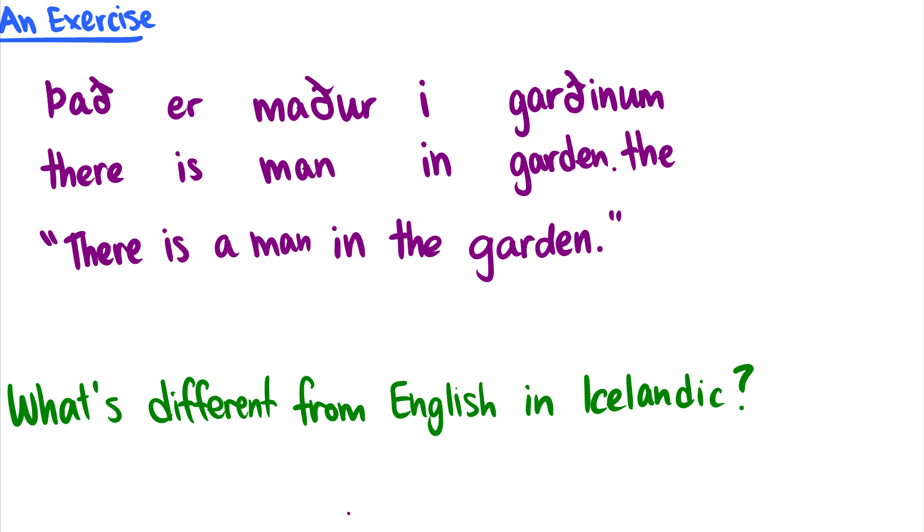Okay, so here's an exercise just to kind of get, you know, you've watched the introduction, you've learned a little bit about glossing. So given the sentence you've never seen before, what can we pull out of this sentence, or this language Icelandic, and we can say what's different from English? Okay, so there is man in garden dot the. Okay, what's the first major thing here? I say dot the here, but really I could write dot definite article. And what does this dot mean? Well, this dot means that the definite article, so this the here, is actually built into the word gardenum.